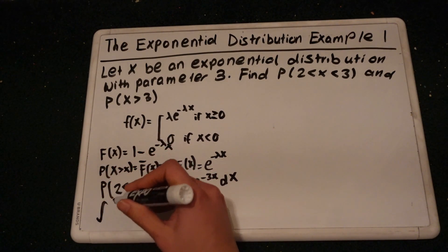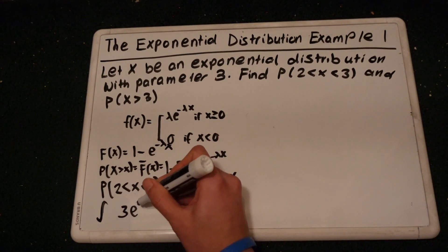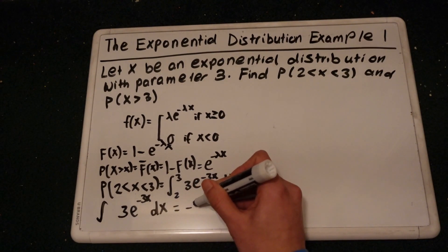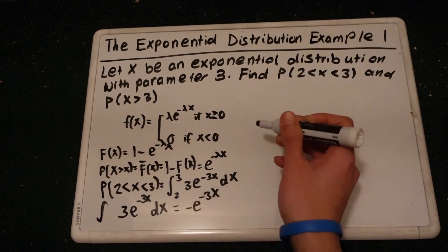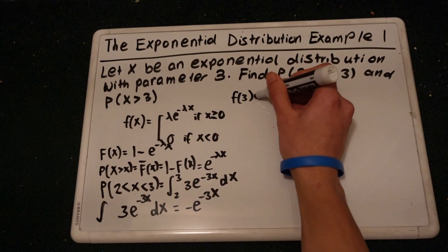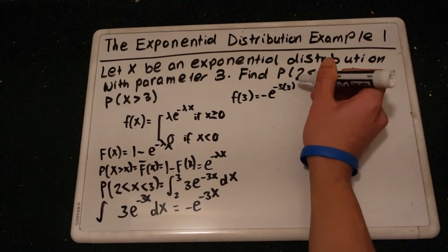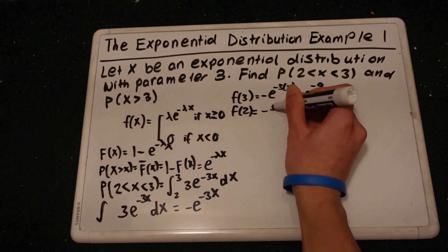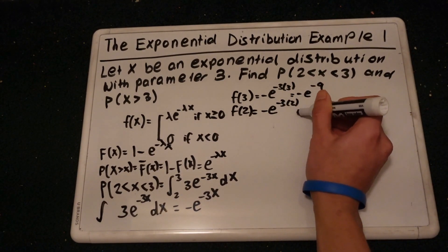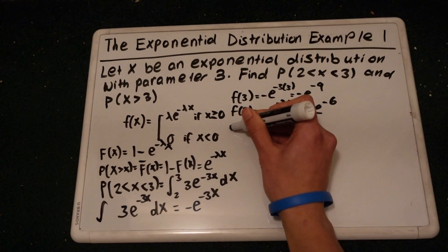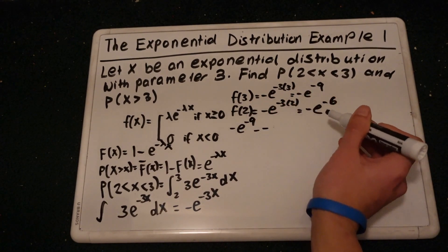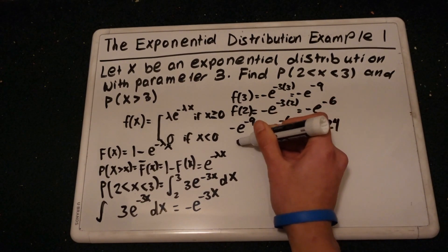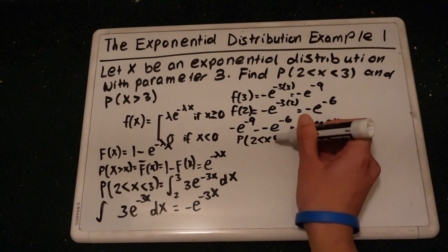Now let me figure out the integral for 3 times e to the negative 3x dx. This would just be negative e to the negative 3x. Plugging in the bounds: f of 3 gives negative e to the negative 9, and f of 2 gives negative e to the negative 6. Subtracting these, we get 0.0024 for the probability that x is between 2 and 3.